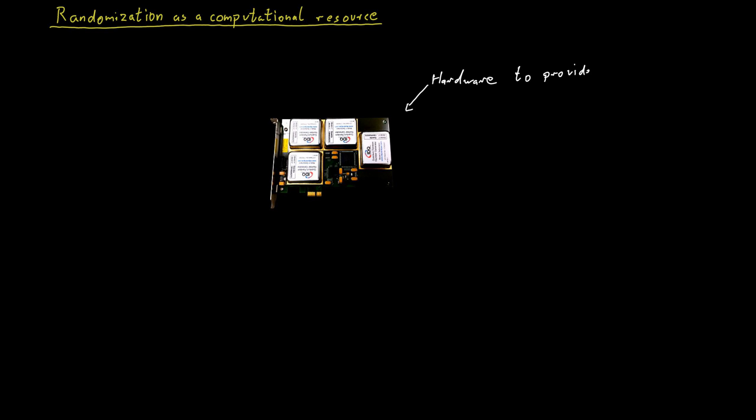And one way of seeing this is that you can really buy hardware products that do nothing but provide you with random bits. These are USB sticks or PCI cards you can put into your computer and they will just provide your computer with a constant stream of random bits. So if you can buy hardware, physical hardware that does nothing but provide you with random bits, then surely this feels like a computational resource. It's an extra resource you provide.